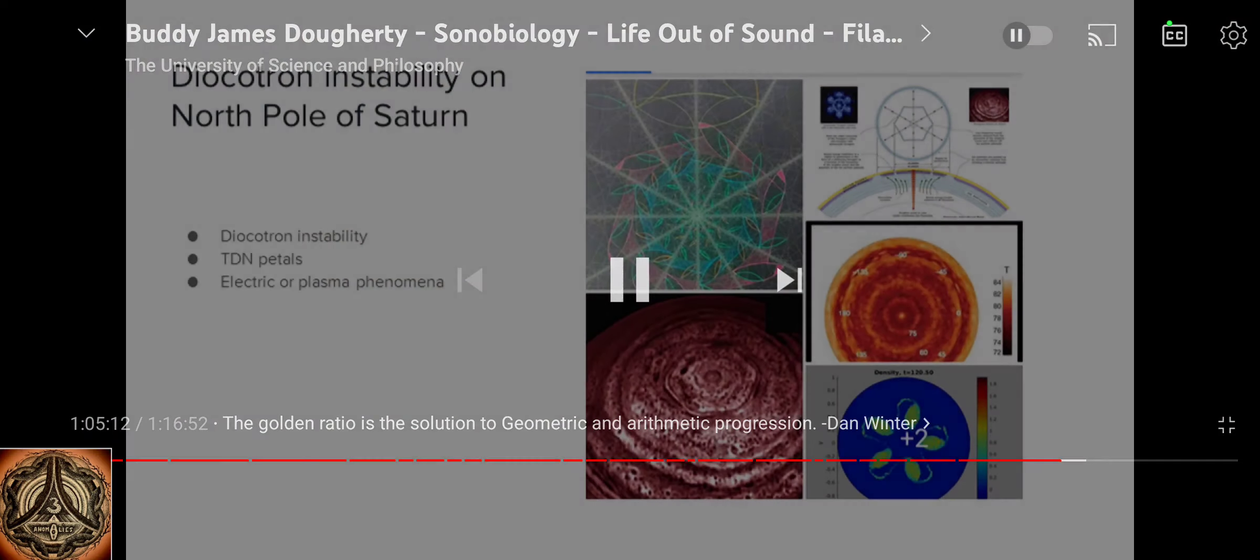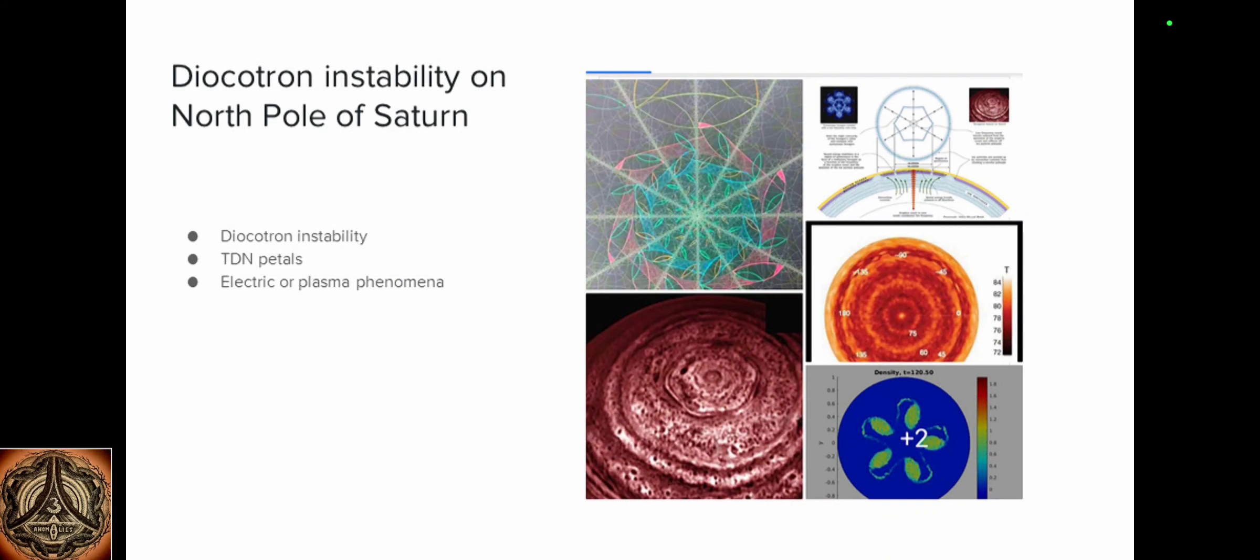That's really interesting. It's a plasma instability as well. This pattern happens at the top of Saturn's north pole. It's a form constant that continually, perpetually forms itself.